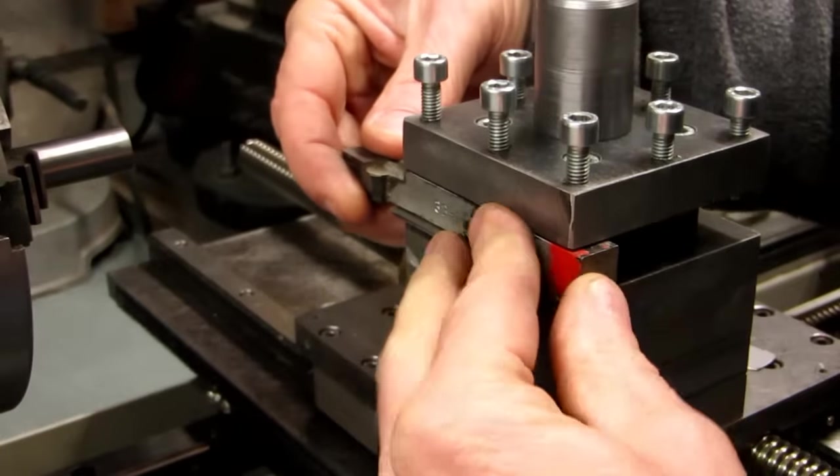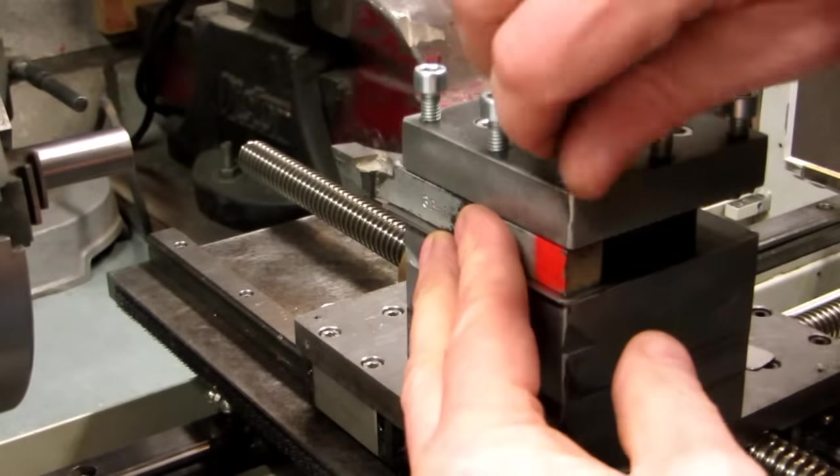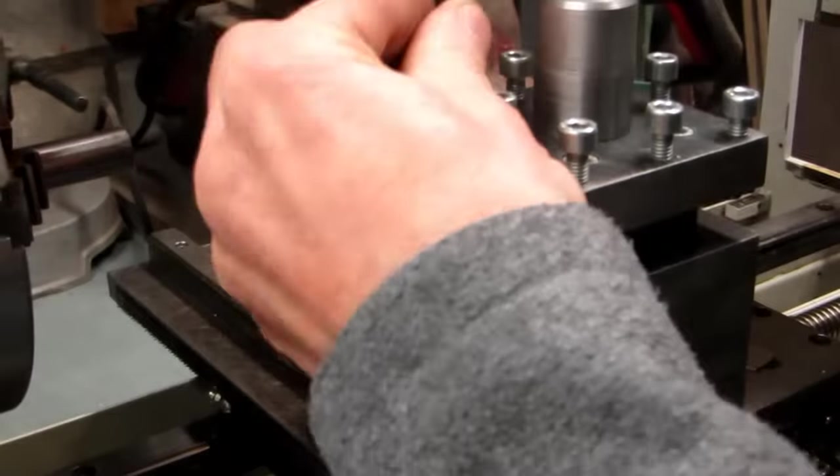The cutting tool is secured to the tool holder via 3 bolts. By adding spacers below the cutting tool, the tool cutting head can be adjusted to match the chuck centerline.